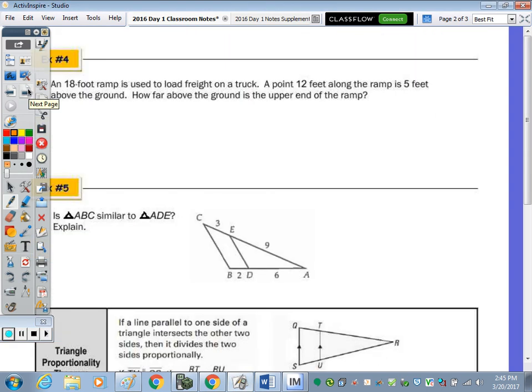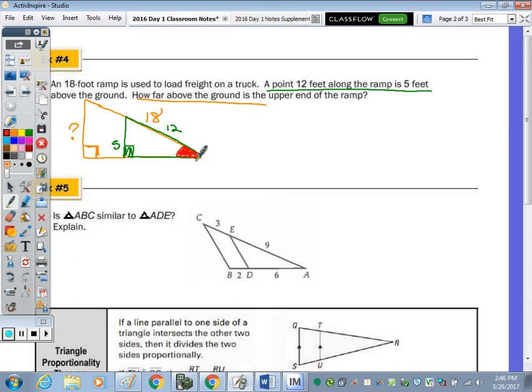In number 4, we have an 18 foot ramp that's used to load a freight truck. Here's my ramp, here's the ground, and we're going to be looking for how far above the ground is the upper end of the ramp. So the height is drawn perpendicular. That's what I'm looking for, and I know this is 18 feet. What we know is that a point 12 feet along the ramp is 5 feet above the ground. So this dimension is 12, and that is 5 feet above the ground. These two triangles are similar by AA. They're overlapping, so they have this angle congruent to itself by reflexive. So they have two angles of one triangle congruent to two angles of another. So let's do it the way Andrew did in the warm-up. 12 divided by 5 is what? 2.4.